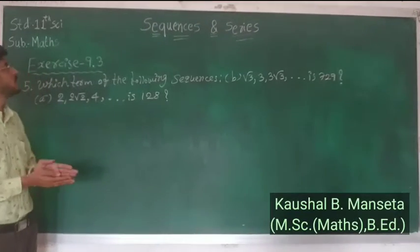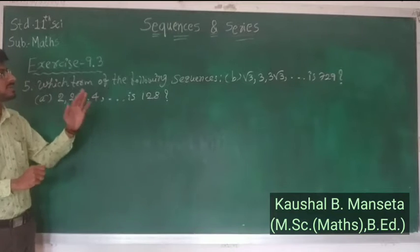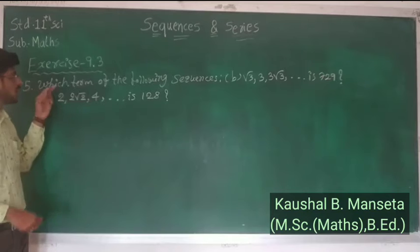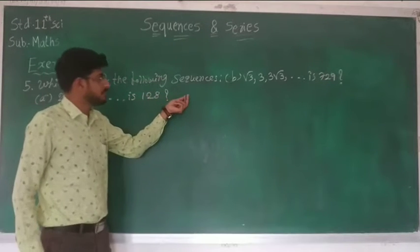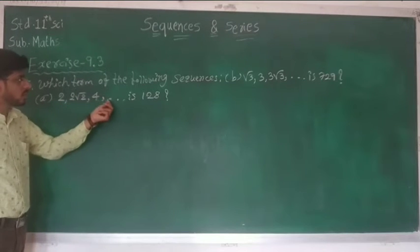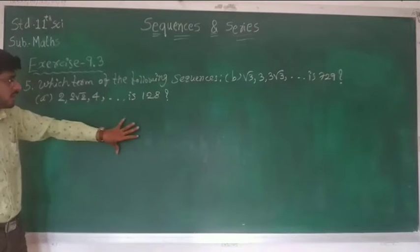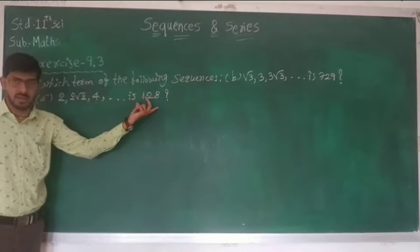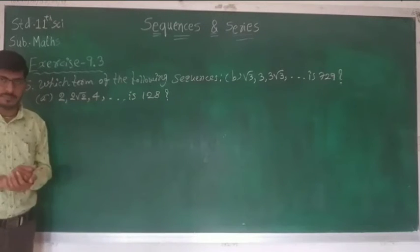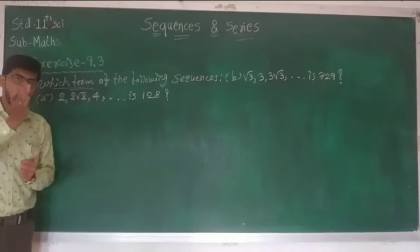Today we are going to learn Class 11 Science Mathematics Chapter 9, Sequences and Series, Exercise 9.3, Question 5. Which term of the following sequences? Part (a): 2, 2√2, 4... up to is 128. We have to suppose that the nth term will be 128, and find the value of n.